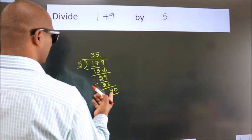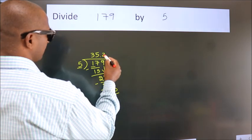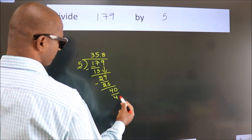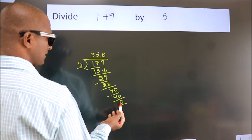When do we get 40 in the 5 table? 5 eights, 40. Now we subtract. We get 0. We got remainder 0.